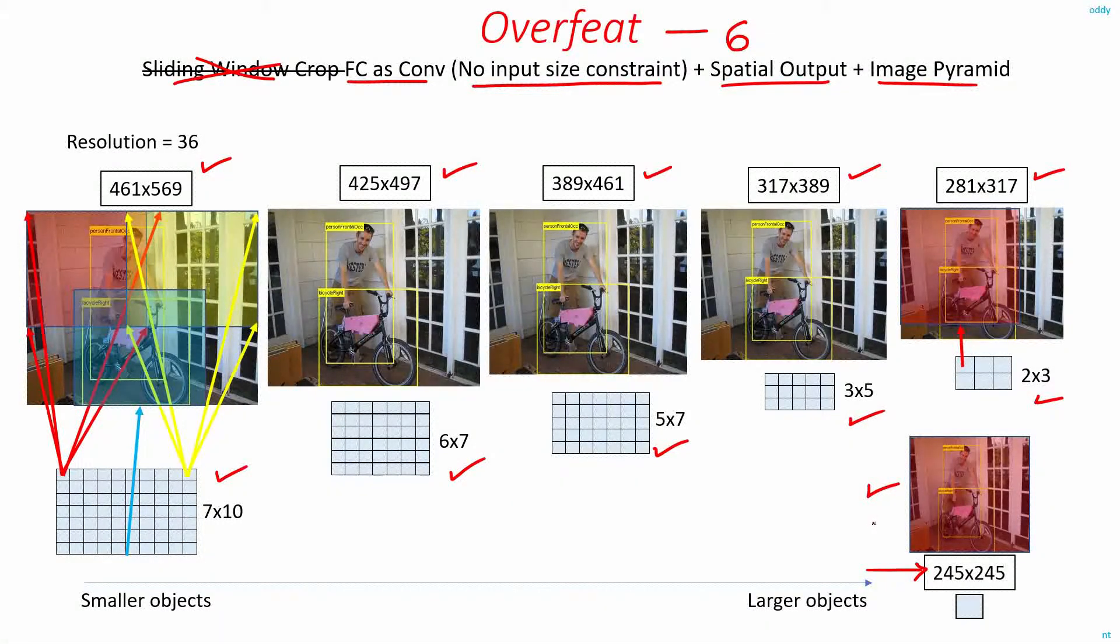So their base scale, the minimum scale of the image that they used, was 245 by 245. So for this scale of the image, you will get just one output. That is, you will be able to detect only one object.